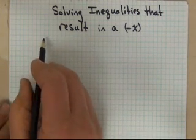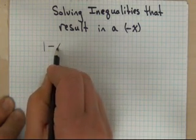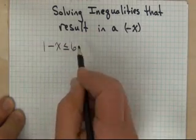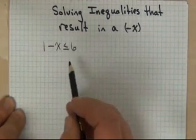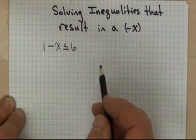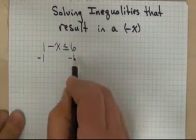So let's start by taking a look at an inequality that might end in a negative x. A good example for that might be 1 subtract x is less than or equal to 6. And just like everything we've done before, we solve it like we would solve a regular equation. So we're going to start by subtracting 1 from both sides.